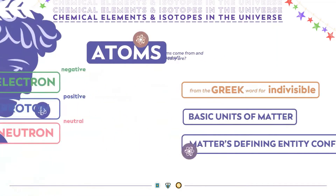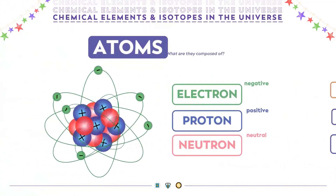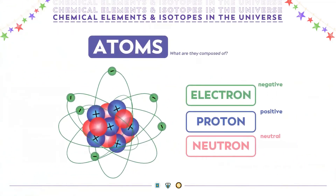We now realize that atoms consist of three particles, which are protons, neutrons, and electrons, consisting of many smaller particles like quarks. Protons are positively charged subatomic particles, neutrons are uncharged particles denoting neutrality, and electrons are negatively charged particles.